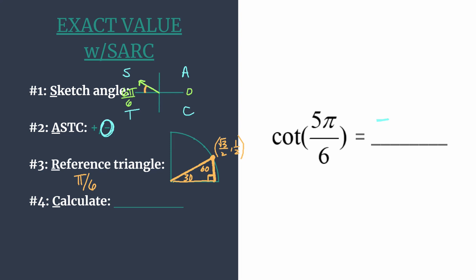Once you have those coordinates, you are ready to make your calculation. So that's the final step C for calculate. And on the unit circle, the cotangent of an angle is going to be simply the x-coordinate divided by the y-coordinate. So we have root 3 over 2 divided by 1 half.